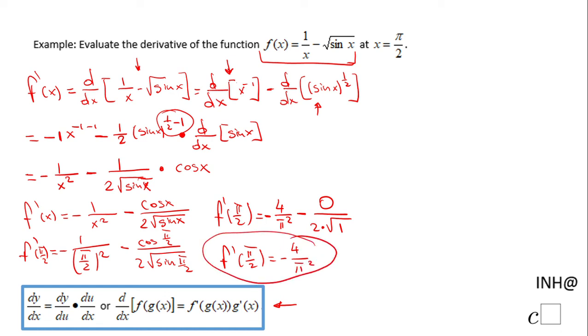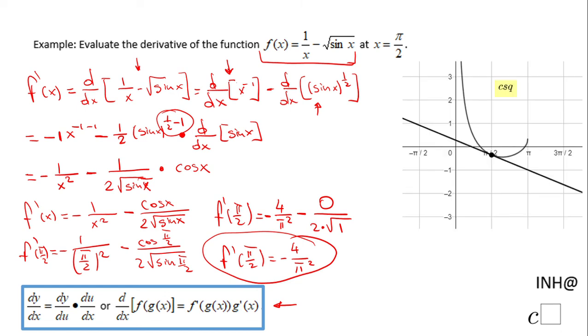Remember that this means nothing else than the slope of the tangent line at pi over 2. You see, this is the tangent line. The slope of this tangent line is negative 4 over pi squared. If you enjoyed this little clip, don't forget to click the like button and come back on C squared for more help. Thank you.